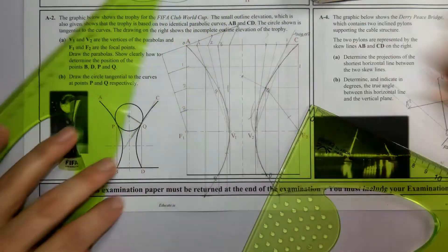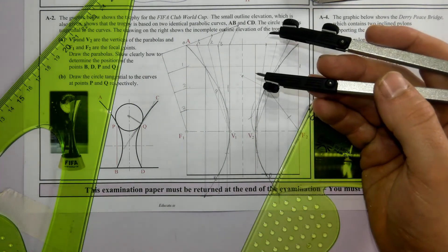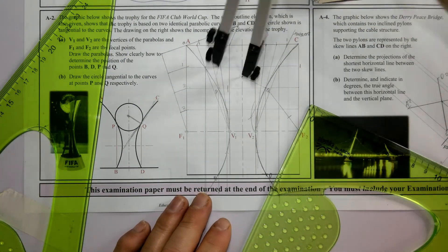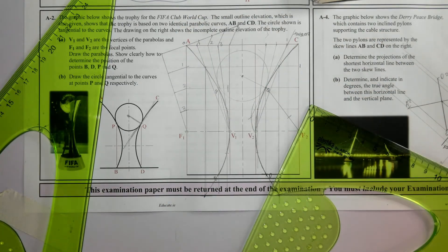And here's the center point of the circle. Now we can go in and draw this circle. And that's it done.